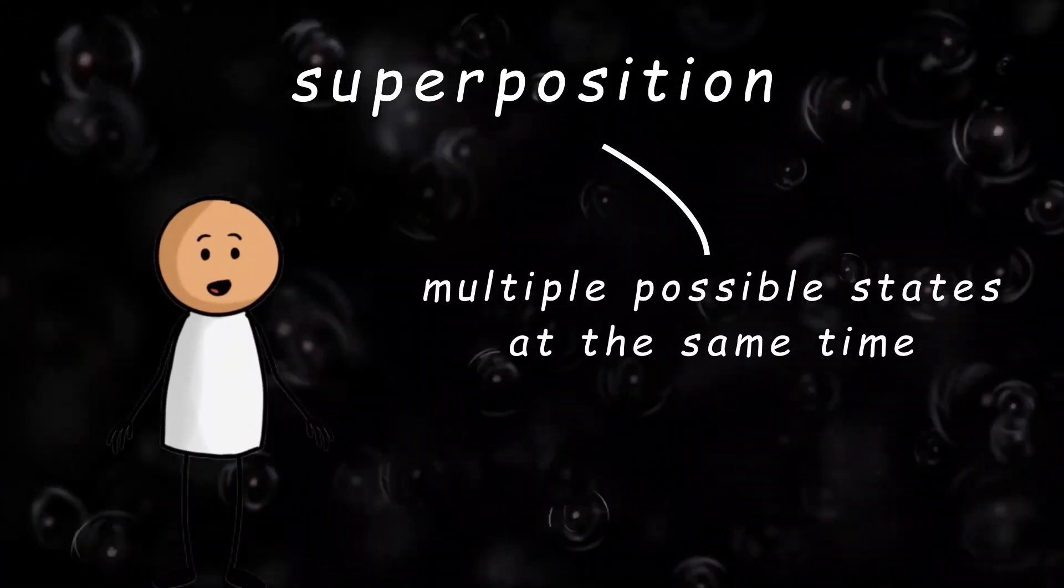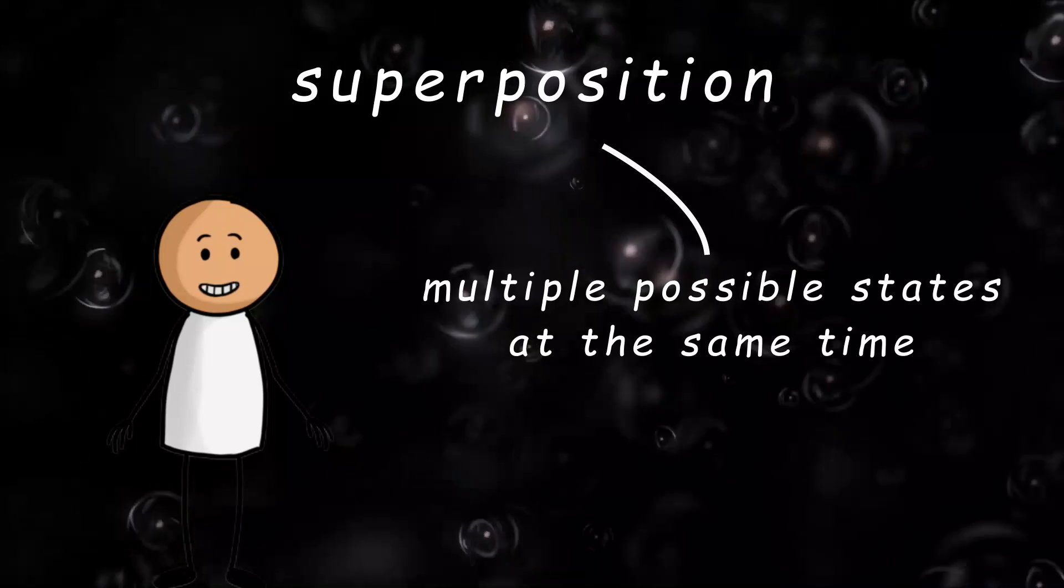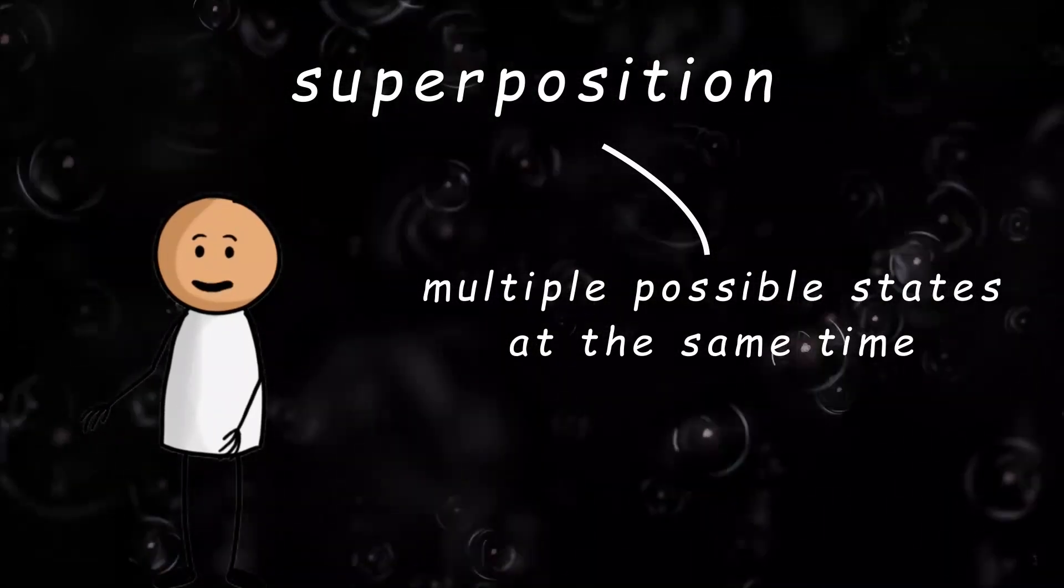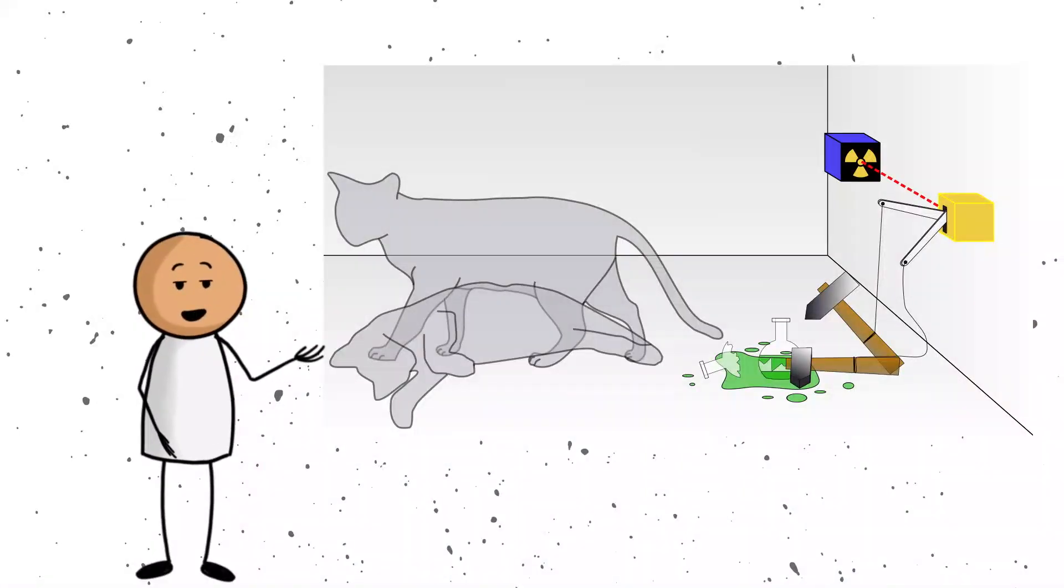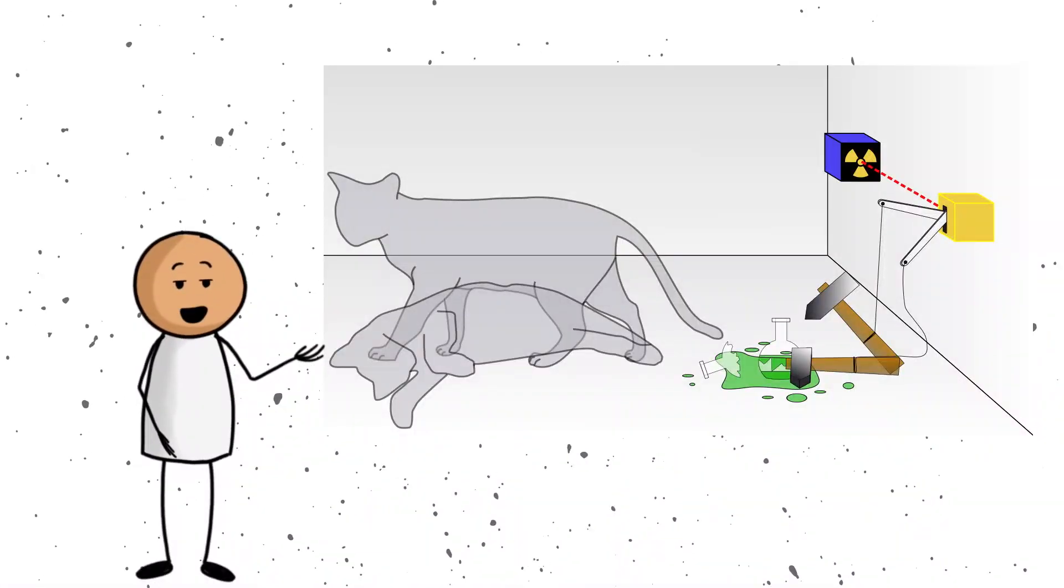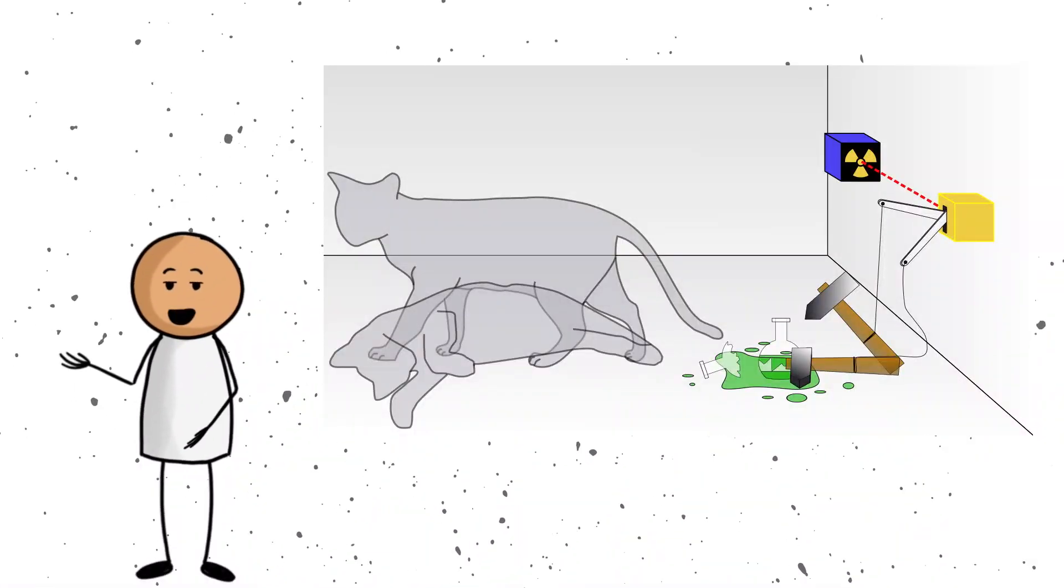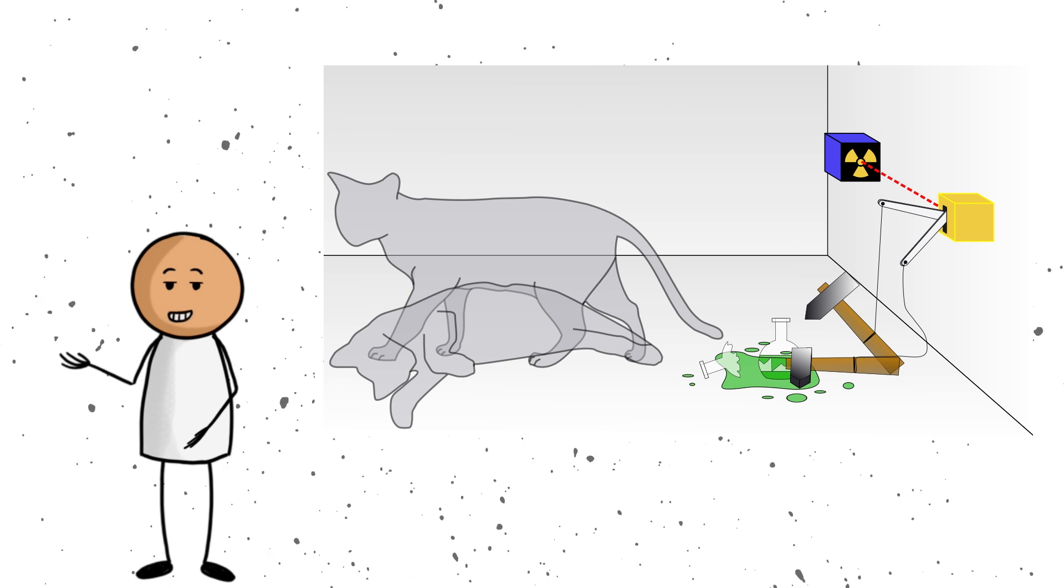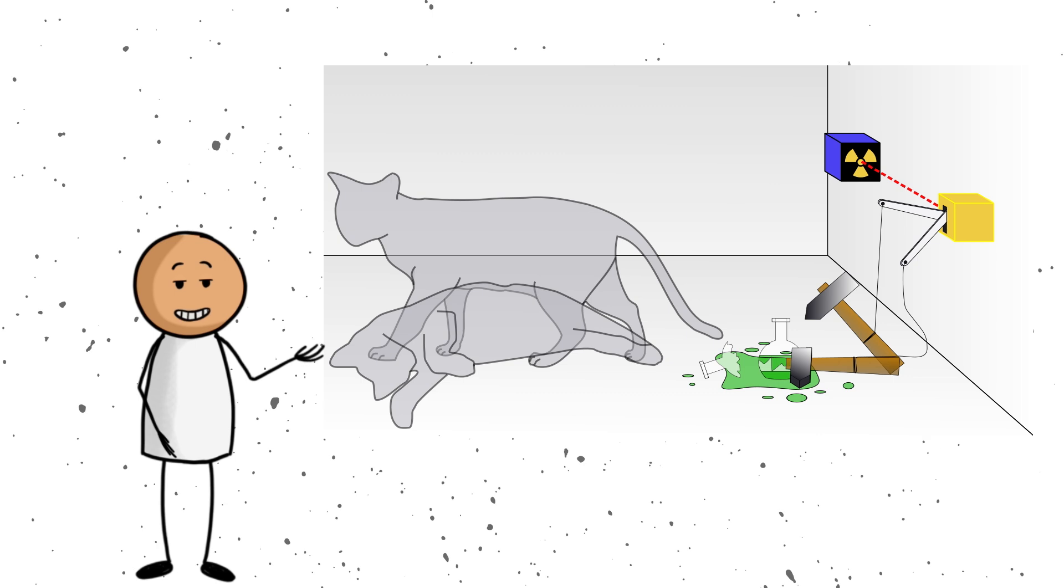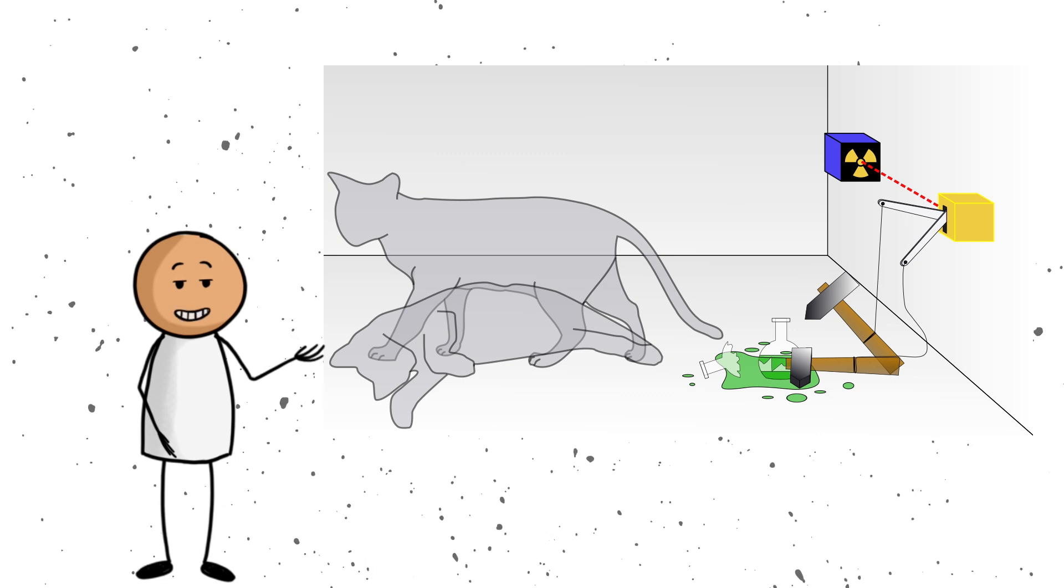It is like if your cat was simultaneously on the couch, in the sink and under your bed, and only when you looked did it choose one spot. This idea was made famous by Schrodinger's Cat, the thought experiment where a cat in a box is somehow both alive and not alive until you peek inside. Creepy and confusing, yes, but it illustrates the weirdness of quantum behavior.